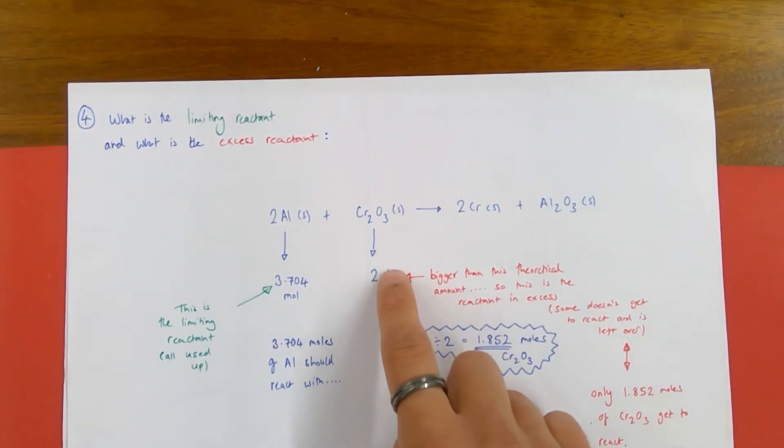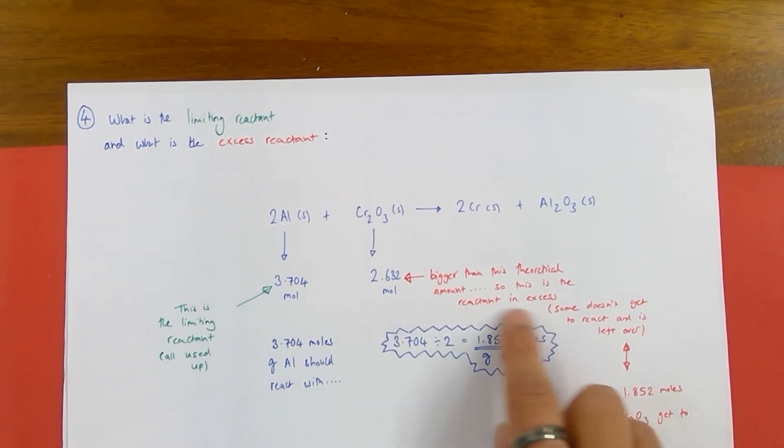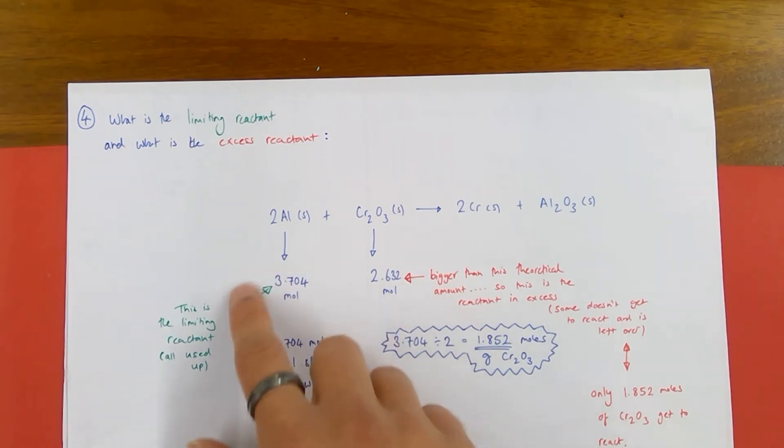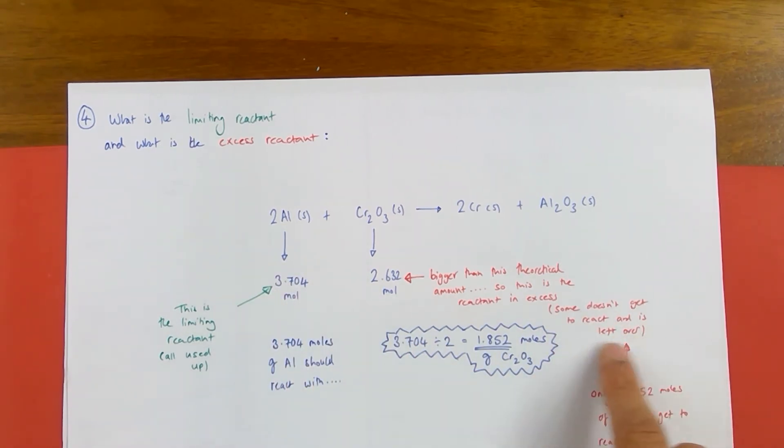Now interestingly, this number is bigger than that. This number of moles present in the actual amounts I've been given is more than the theoretical amount of chromium required to completely react with all the aluminium present. Therefore, this reactant is in excess. There's so much of it, there's more than required for the reaction to go to completion in terms of how much aluminium I've got. So some of it doesn't get used, it doesn't get used at all, it gets left over. So there's more than enough chromium oxide present, it is in excess.